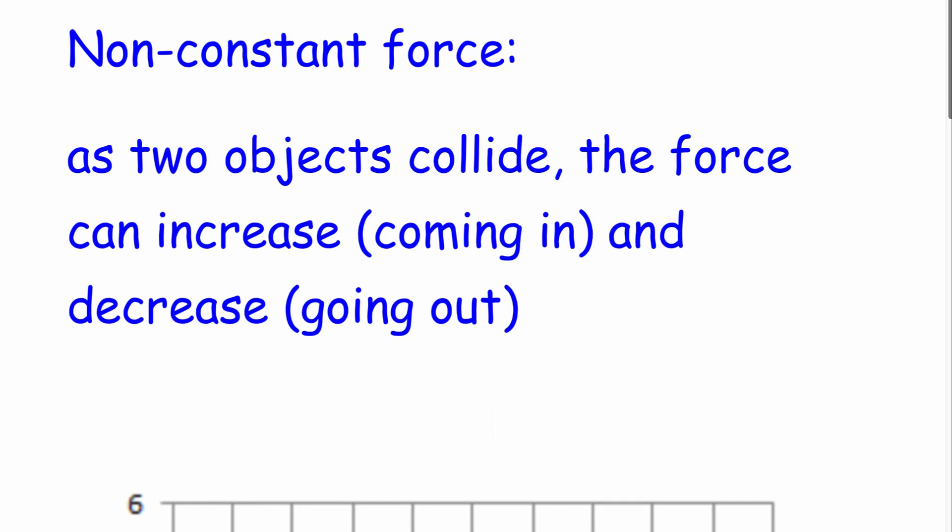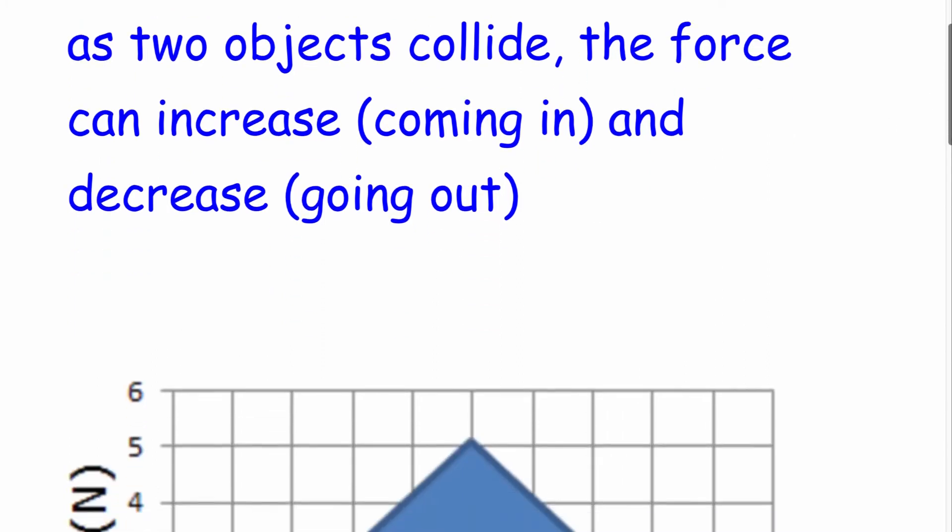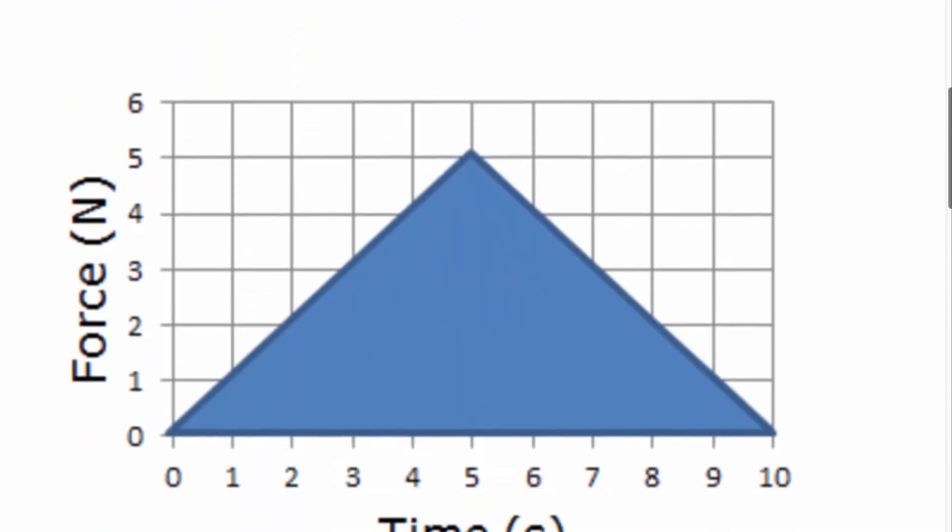So when we have two objects that come into collision or an interaction, the force can increase as the objects are coming into contact and decrease as they're going out, which means we can have a graph that looks something like this.